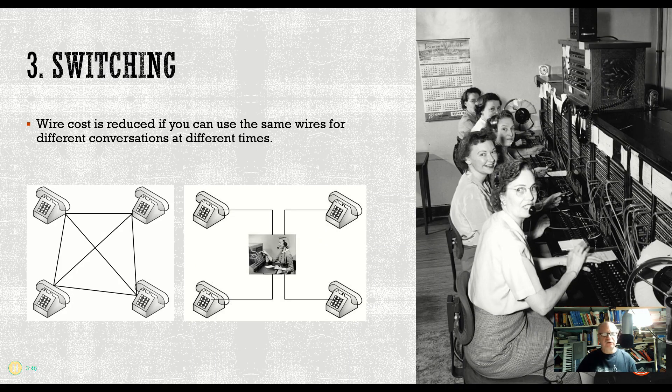The third one is switching. Now if you can imagine, if every telephone in the world had to be connected together to every other telephone, you would have to have, in this case I got four phones and each phone has to have three wires coming from it, one to each other phone.